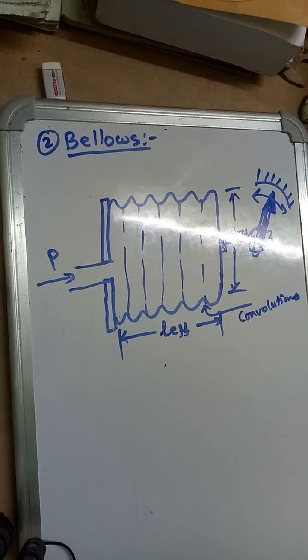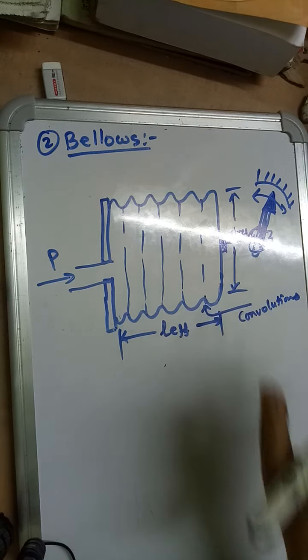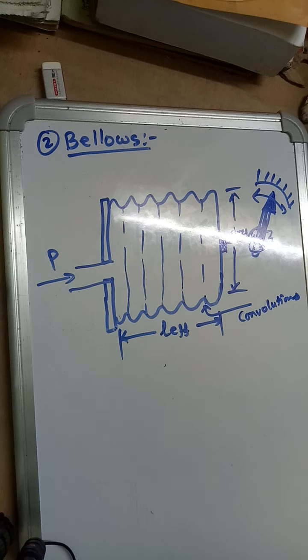The bellows element is basically a one-piece expansible, compressible, collapsible, axially flexible member. It consists of several convolutions or foldings. It is usually formed in one continuous operation from a thin seamless tube into a deeply folded or corrugated unit by either a hydraulic or mechanical method. It may be made from a continuous piece of thin metals.